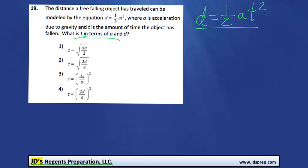A good starting point is to multiply both sides of the equation by 2, and by doing that, we'll be making that fraction disappear, kind of like that. So we'll end up getting 2d equals at squared.